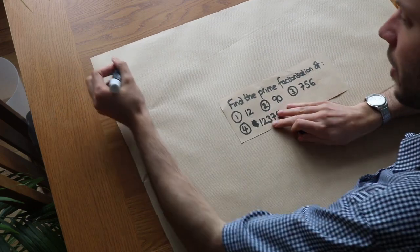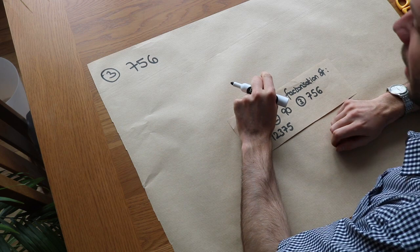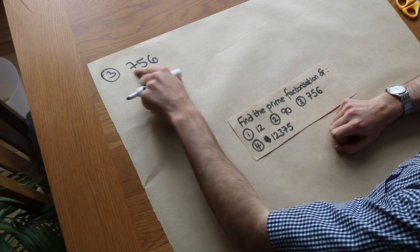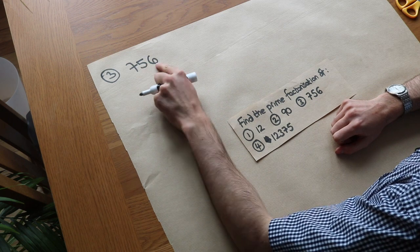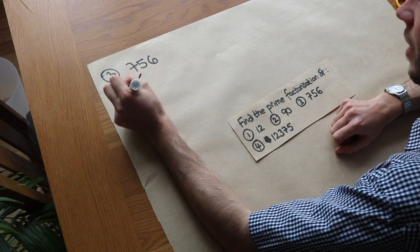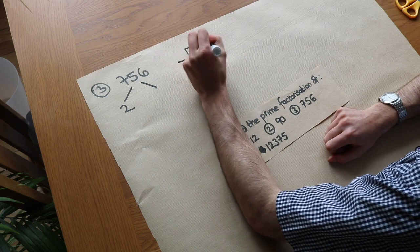Now what about this third one? We've got 756. It's not immediately obvious what numbers it divides by. But what I tend to do if it's a big number is to find a small number that we know goes into it. So this is even, so we know that 2 certainly goes into it. So we then just have to divide it by 2. So 756 divided by 2.